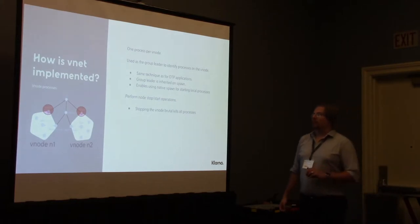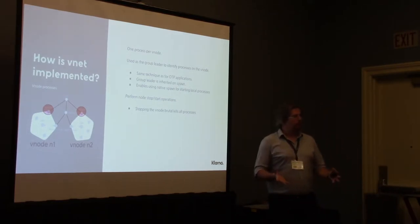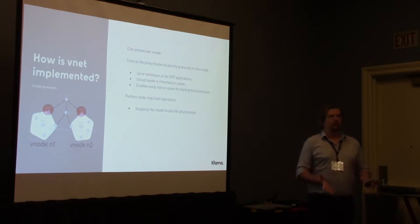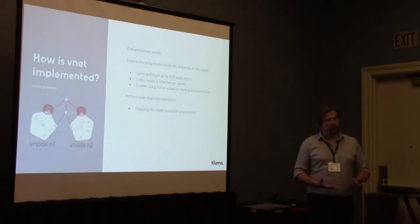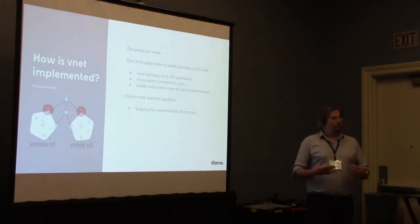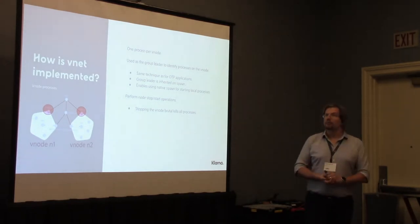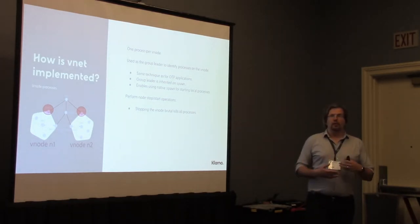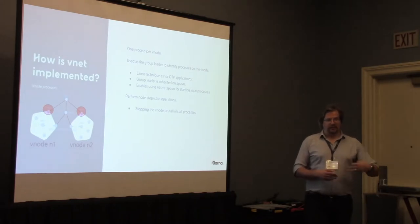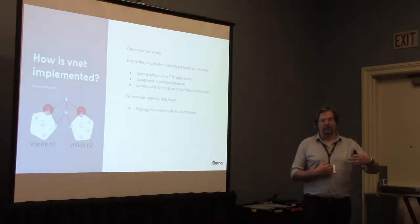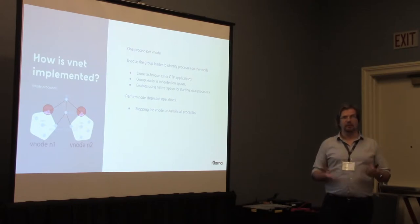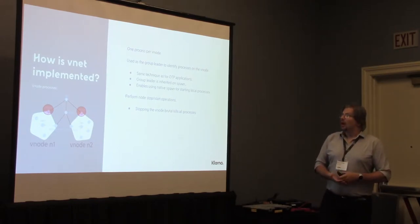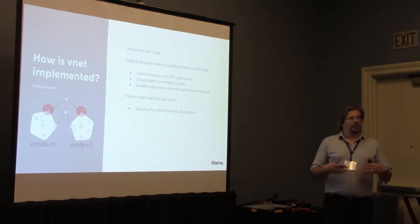First, we have the VNode processes. Their purpose is to group together processes running on a VNode. They are not supervisors — they are group leaders. This is basically the same trick that OTP applications use. The group leader of the process identifies the group that it belongs to, and it's inherited on spawn, so it's very convenient. We can use native spawning for local processes and they still belong to the same VNode. The other duty of these VNode processes is to perform node start and stop operations — stopping, for example, means killing all processes on the VNode.